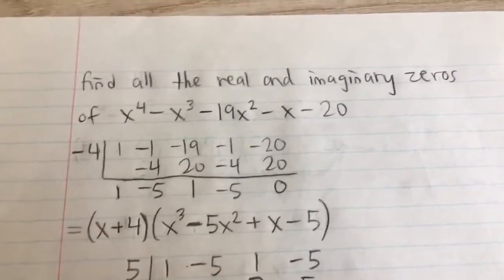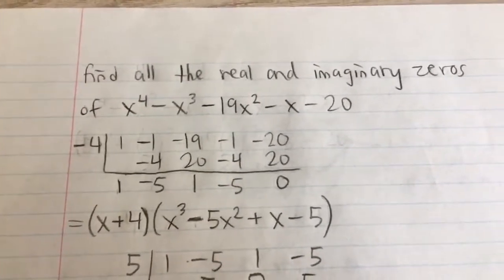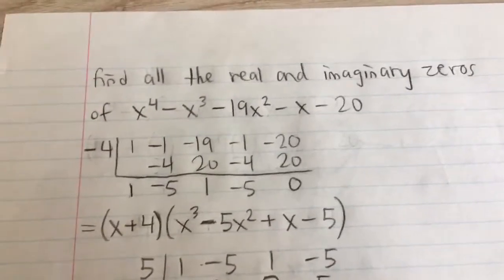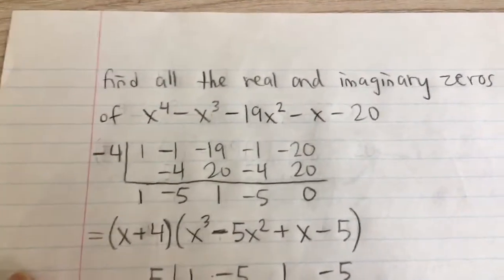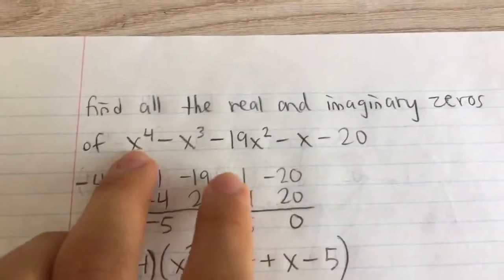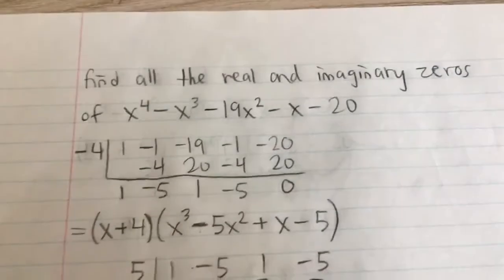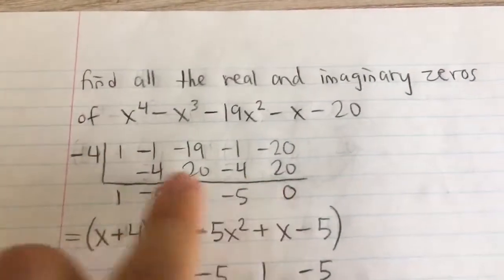Now you typically want to start with testing the lowest values, like 1 and negative 1 first, because they're the easiest and they're usually the most common. And the way we can do this is basically you can just plug them in, like 1 to the 4th minus 1 cubed, etc. But there's an easier way, just use synthetic division.